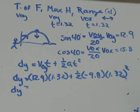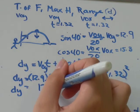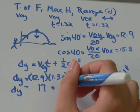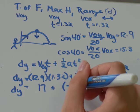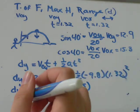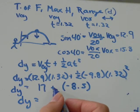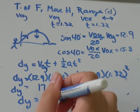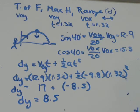12.9 times 1.32, that's equal to about 17. 1 half times 9.8, don't forget your negative sign, times 1.32 squared. I get that's equal to about negative 8.5. And, 17 plus negative 8.5 is the same as 17 minus 8.5, and I get that's equal to 8.5.